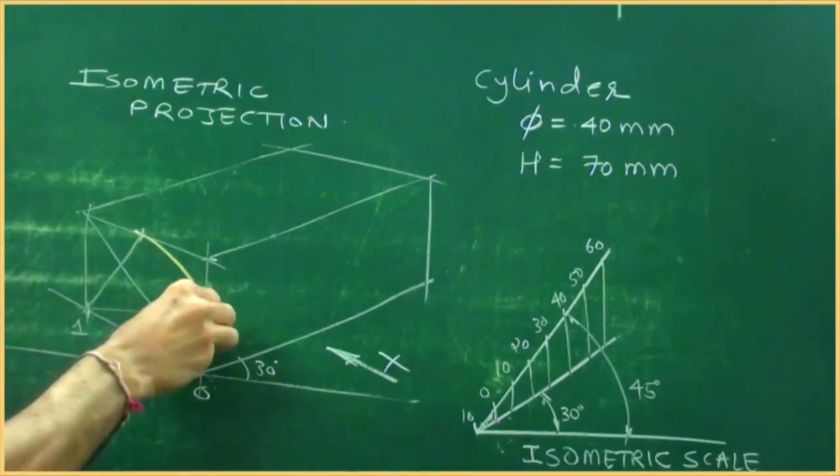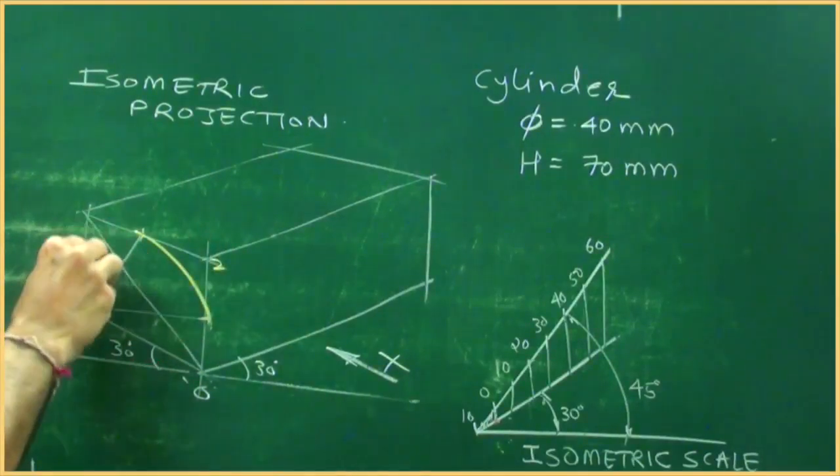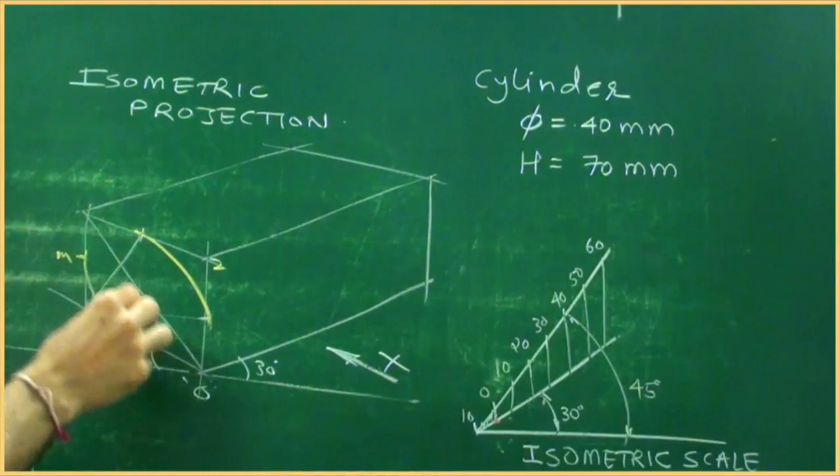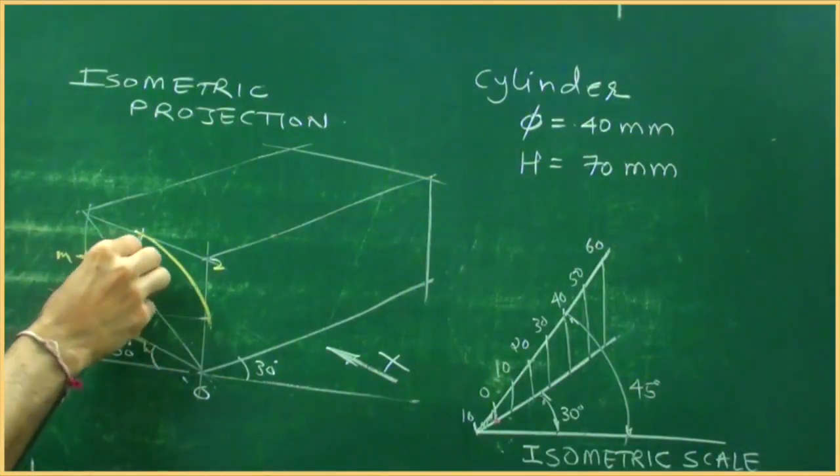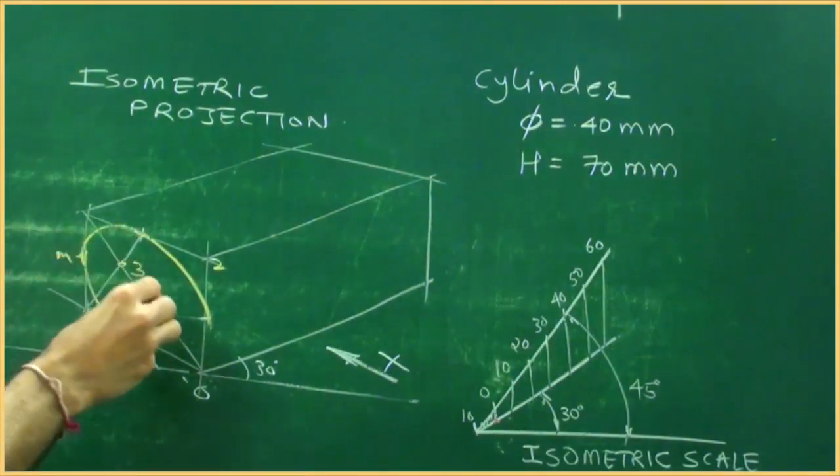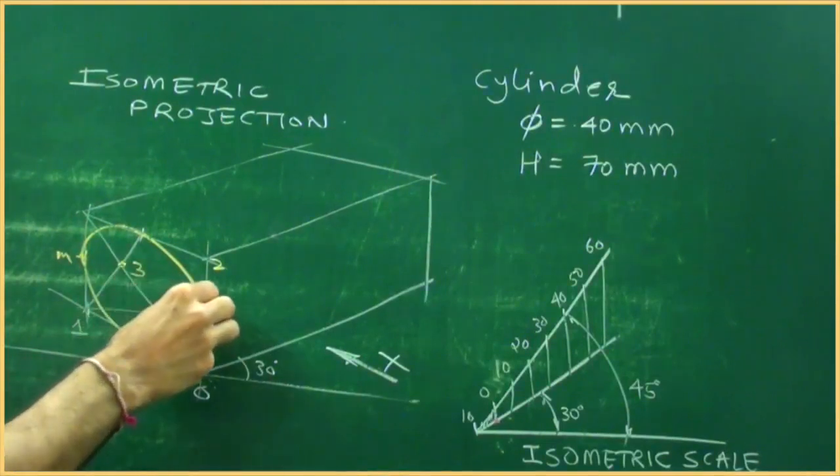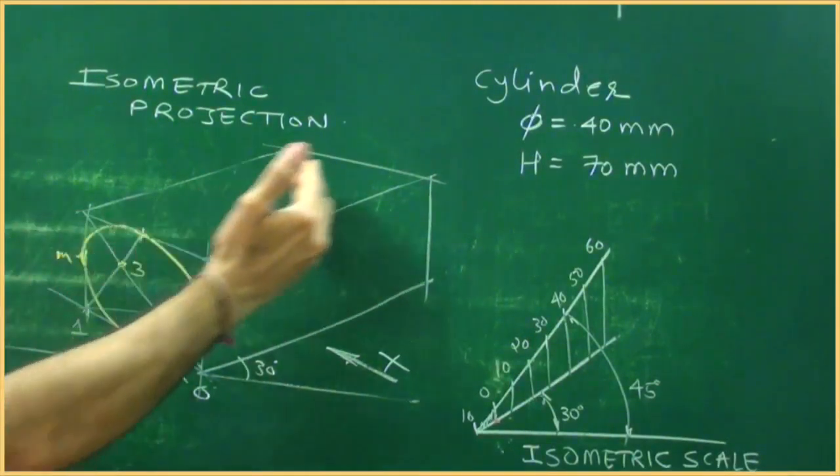So from here 1 we can draw this arc, from 2 we can draw this arc, this is also midpoint, this is point 3 we can draw this curve, this is point 4 we can draw this curve. Now same thing is behind